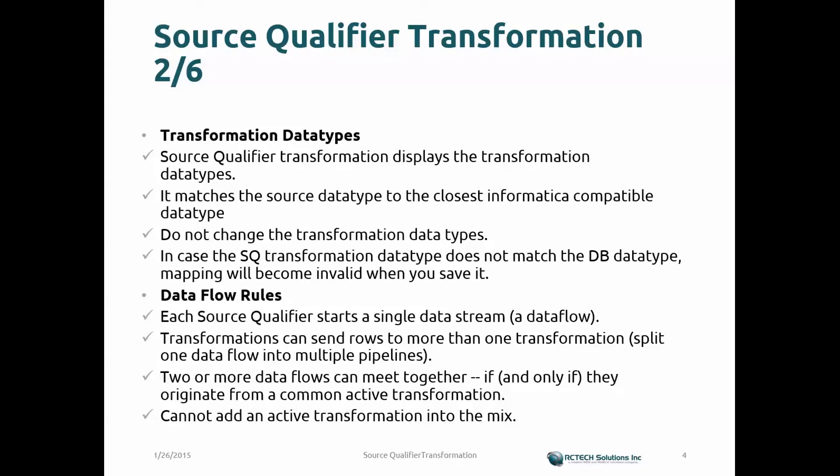The data type mapping is not exactly the same as what's created in relational tables. For example, Oracle may have different data types, and Teradata could have additional or modified ways of defining the same data types. In the Informatica world, it creates the data type closest to what the source system has. If the mapped data type doesn't match the DB type, the mapping will become invalid when you save it — so be very careful when making changes to the Source Qualifier data type.